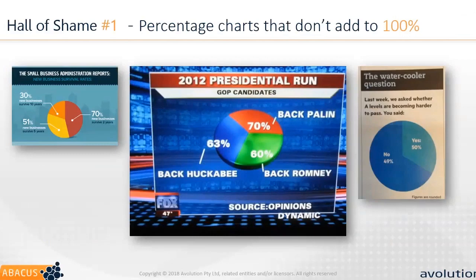Another bad example shows 49% voted no and 50% voted yes, but the no wedge is much bigger than the yes wedge — very misleading. Always make sure the visual actually supports the data. In this case, a simple table showing 50% yes and 49% no would be clearer. The visual here doesn't help — it just adds confusion. Always make sure something adds up to 100% before publishing a pie chart.